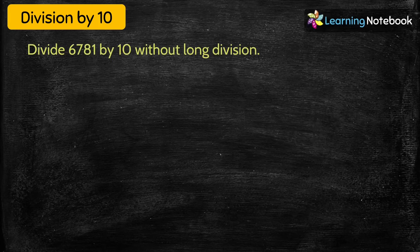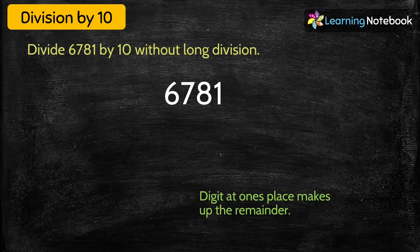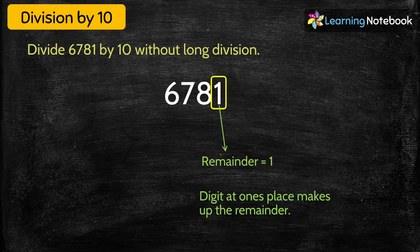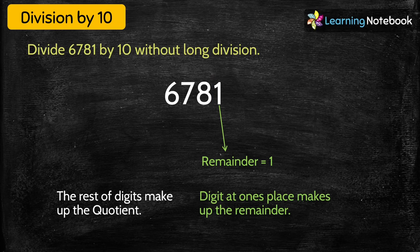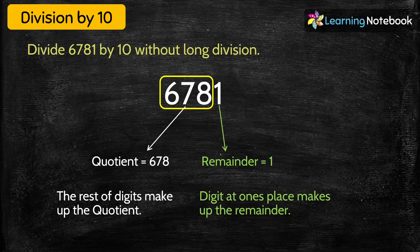Now let's do division by 10 without using the long division method. Divide 6781 by 10. As observed, the digit at the ones place becomes the remainder. Here the ones digit is 1, so remainder = 1. The rest of the digits — 678 — make up the quotient. So we have divided 6781 by 10 without long division: quotient = 678, remainder = 1.